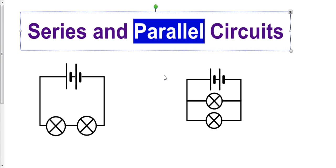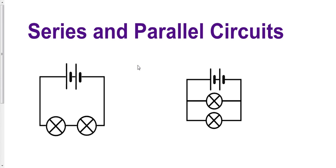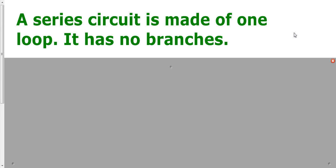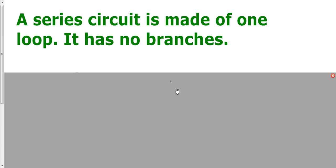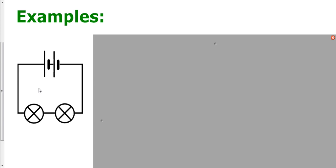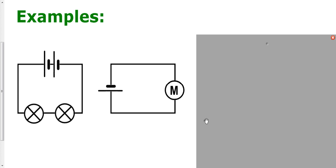So what are series and parallel circuits? A series circuit is made of one loop and it has no branches. So if you see a circuit and it's made of one loop and it has no branches, that is a series circuit. Here we've got a circuit with two cells and two bulbs. These components are all in a complete loop — a simple loop. There are no branches where the current is going to split and go one way or another; it's just a single loop, no branches. It's a series circuit.